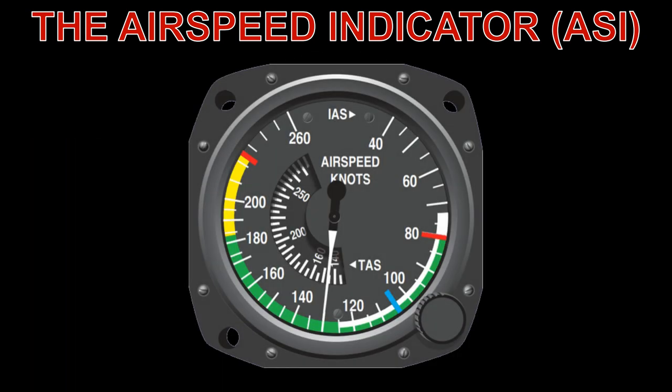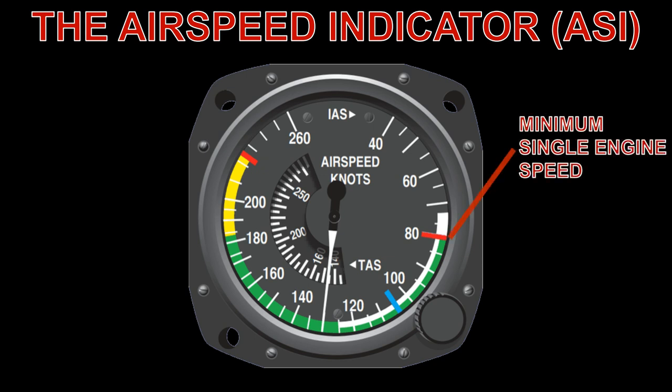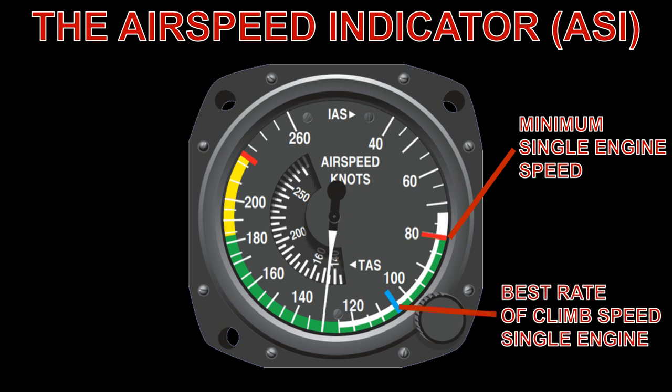The ASI in multi-engine aircraft includes two additional radial markings, one red and one blue, associated with potential engine failure. The radial red line near the bottom of the green arc indicates the minimum indicated airspeed at which the aircraft can be controlled with one engine inoperative. The radial blue line indicates the speed for best rate of climb with one engine inoperative.